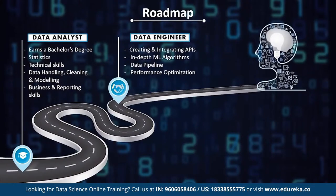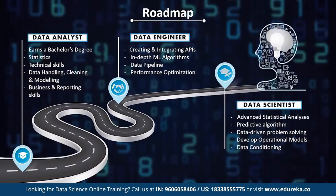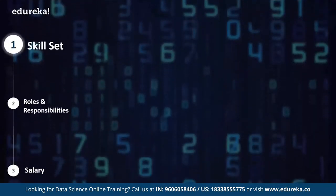The transition between a data analyst role and a data engineer role is possible in multiple ways — you can either acquire a master's degree in a data-related field or gather experience as a data analyst. Adding on to the skills of a data analyst, a data engineer needs a strong technical background with the ability to create and integrate APIs, and must understand data pipelining and performance optimization. The next milestone in a data engineer's career is becoming a data scientist, which requires advanced statistical analysis, a complete understanding of machine learning and predictive algorithms, and data conditioning.